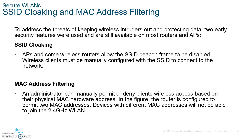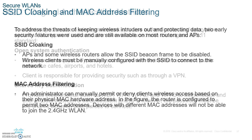Wireless clients must be manually configured with the SSID to connect to the network. The second method is MAC address filtering — you manually permit or deny clients wireless access based on their physical MAC address. Hotspots use this: they store your MAC address and check it every time you send a frame. In the ethical hacking course, we'll also cover how to spoof a MAC address.